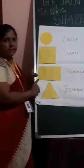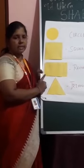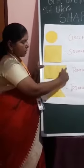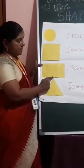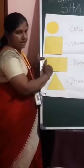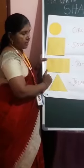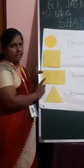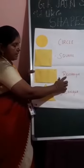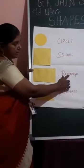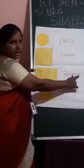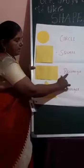The third one — what is this? Rectangle. Rectangle has four corners, but the opposite sides are equal. The opposite sides are equal. This is called rectangle. Tell out the spelling: R-E-C-T-A-N-G-L-E. Rectangle. Clear?